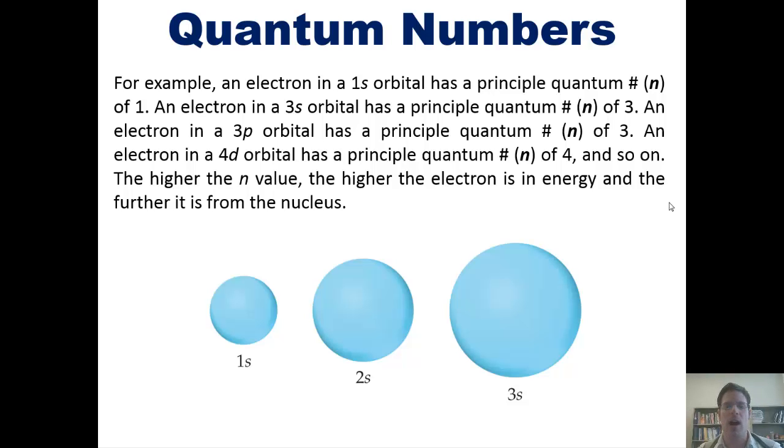The higher the n value, the higher the electron is in energy, and the further away it is from the nucleus. You can see in this picture that the only difference between a 1s, a 2s, and a 3s orbital, and by extension of 4s, 5s, 6s, and so forth, is their size. All of them are spherically shaped.